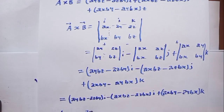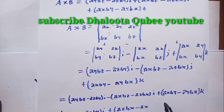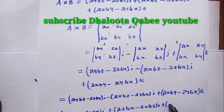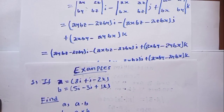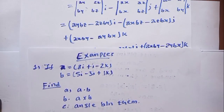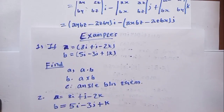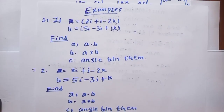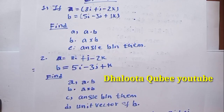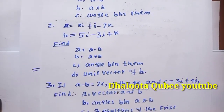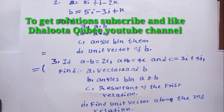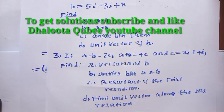So the full cross product formula is: a cross b equals (ay·bz minus az·by)i minus (ax·bz minus az·bx)j plus (ax·by minus ay·bx)k. Some examples are given: for vectors a and b, find a dot b, a cross b, the angle between them, and the unit vector along b. We will solve these examples in the next video lecture. Don't forget to subscribe, like, share, and comment below.